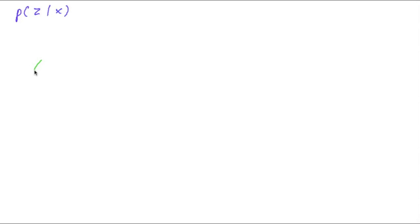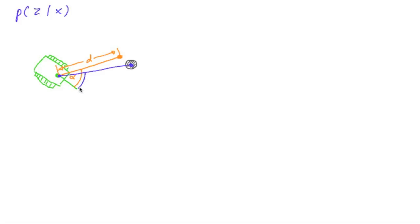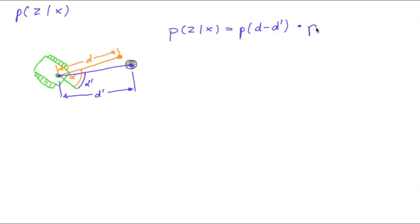Now let's compute this probability of a measurement given a state. Say our robot is here, looking in that direction, and from its scan it sees a landmark. Alpha and d are the measurement values obtained from the laser scanner. Say the real position of the landmark is at some other location, so according to the state of the robot, the correct bearing should be alpha prime and the correct distance should be d prime. The probability of the measurement given state x is the product of the probability for the distance difference and the probability of the difference in the angle.